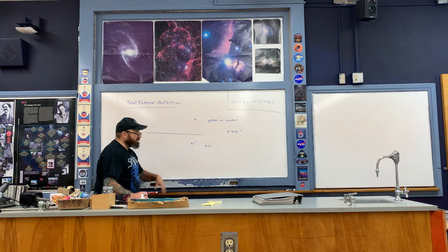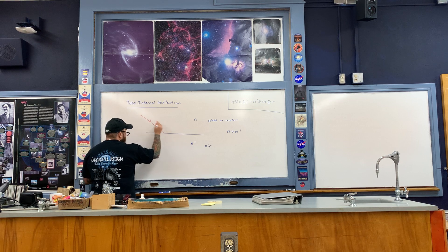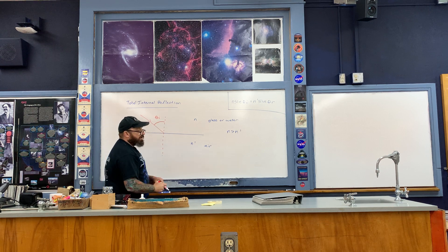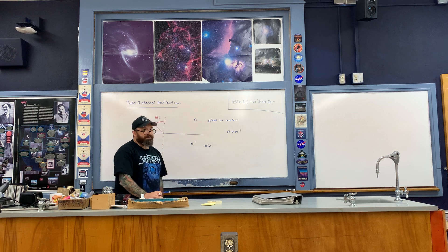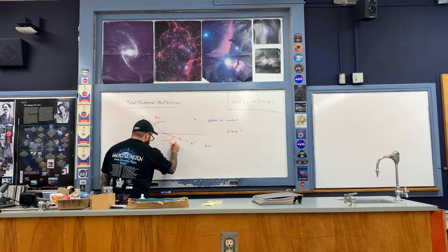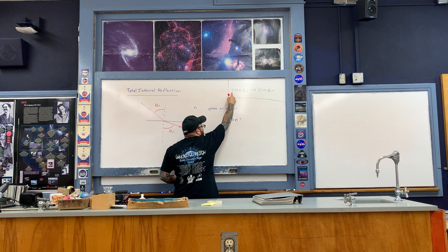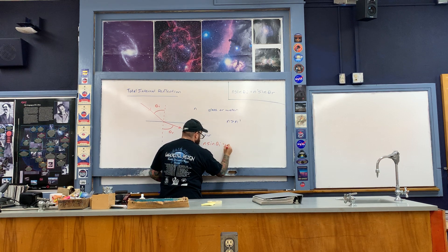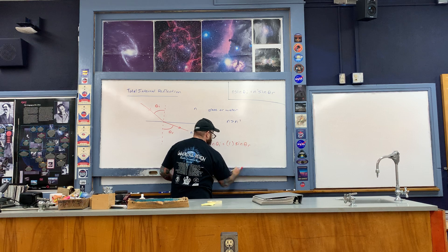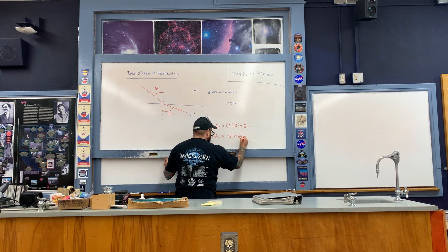Light refracts from a high to low index of refraction. Here is an incident light ray, and here is the normal line with the angle of incidence. Recall that when refracting from high to low index, you bend away from the dotted line — that is the angle of refraction. Snell's law is written as N times sine of the incident angle equals N-air, which is one, times sine of the refracted angle. So N times sine of the incident angle equals sine of the refracted angle, meaning the refracted angle is greater than the incident angle.